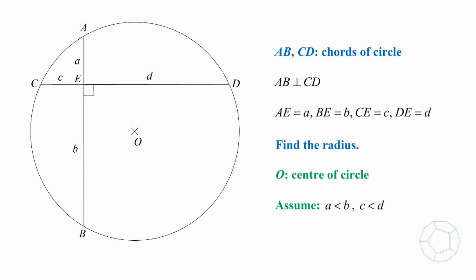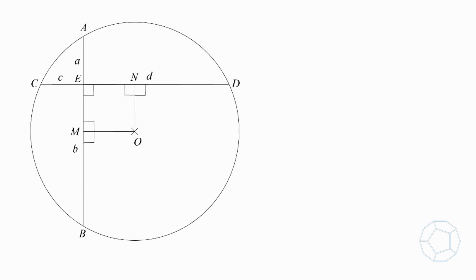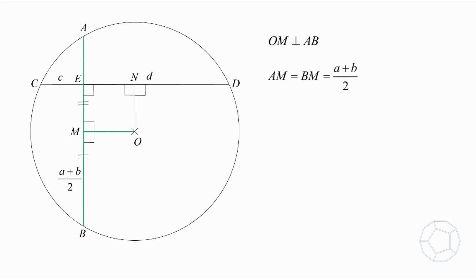Now, to deal with problems of chords, we usually construct perpendicular lines from the center O. Why? Because we have a very useful theorem. Here, OM is perpendicular to AB. Then, AM is equal to BM, which is equal to (a + b) / 2.